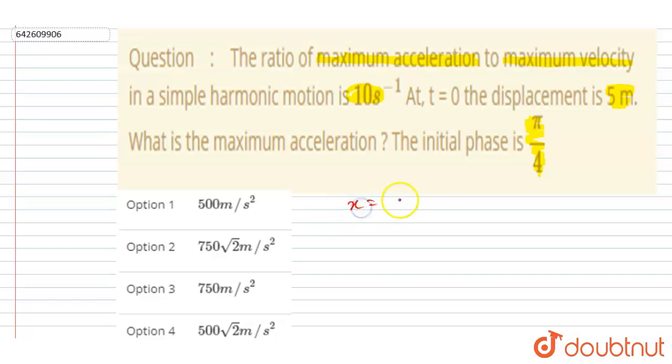x equals A sin(ωt + π/4), right? And it is also given that at t = 0, the displacement is 5. So if I put the value of t = 0, I should get x = 5. So let's put the value of x and t.